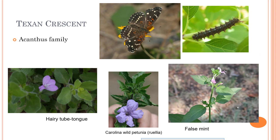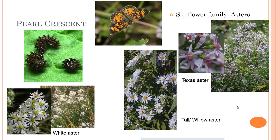Crescents are also in the nymphalid group, and these guys like things in the acanthus family — hairy tube tongue, Carolina wild petunia, and false mint. Pearl crescents also like things in the sunflower family, but more specifically they like asters: white aster, tall willow aster, and Texas aster. Be careful with this, because a lot of people plant asters as part of their regular landscape and very quickly the pearl crescents can take over your asters, so you have to keep an eye on it.